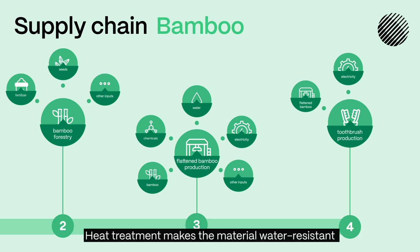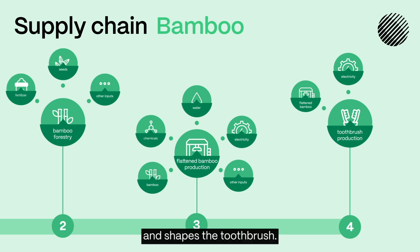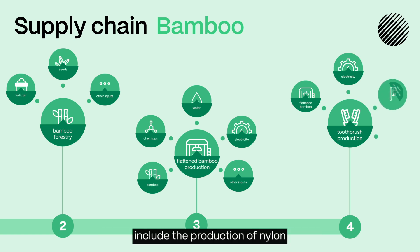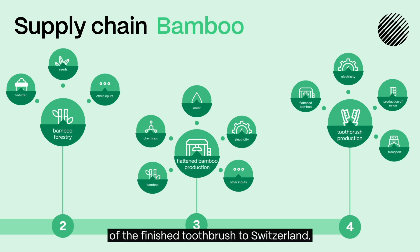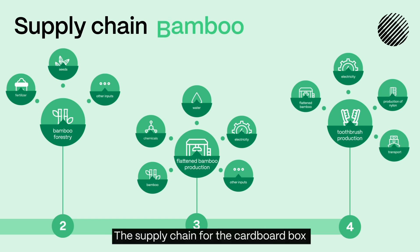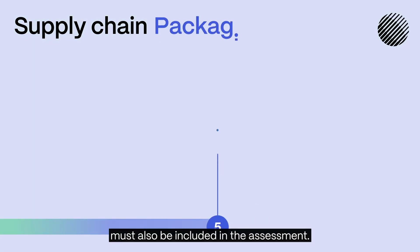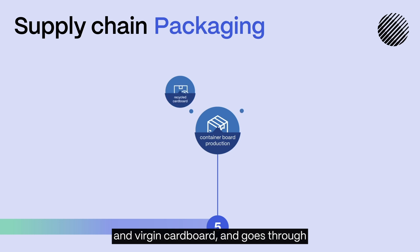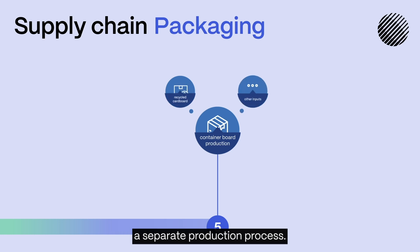Heat treatment makes the material water-resistant and shapes the toothbrush. Other inputs during this stage include the production of nylon for the bristles, and the transport of the finished toothbrush to Switzerland. The supply chain for the cardboard box must also be included in the assessment. The box is made from a mix of recycled and virgin cardboard and goes through a separate production process.